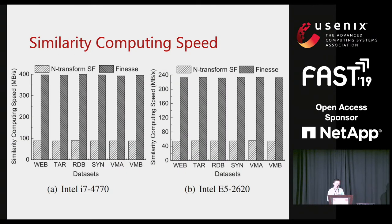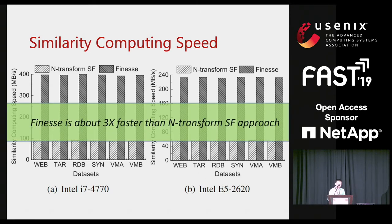Now let's look at the computation speed. The figures show that PHILESS improves the resemblance detection speed by an average of three times on two evaluated CPUs. This is because PHILESS requires much fewer operations when computing features, since it removes the linear transformations for feature extraction.